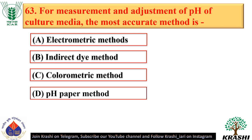Question number 63. For measurement and adjustment of pH of culture media, the most accurate method is the electrometric method — option A.